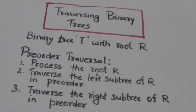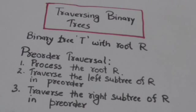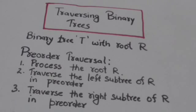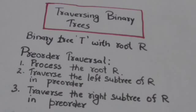Hello friends, welcome back. In this tutorial we will study how we can traverse binary trees. There are three ways to traverse a binary tree T whose root is R: it can be traversed in in-order, it can be traversed in pre-order, and it can be traversed in post-order.